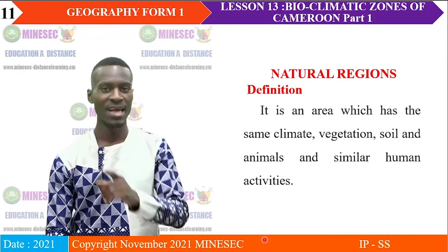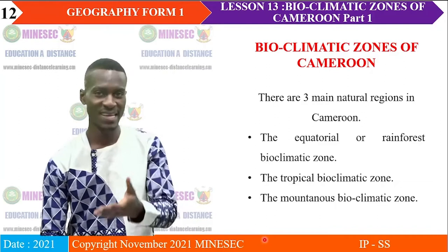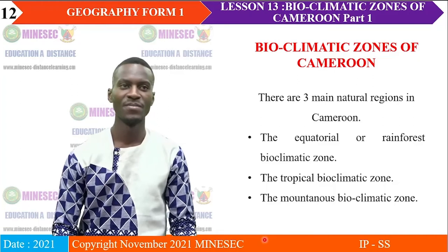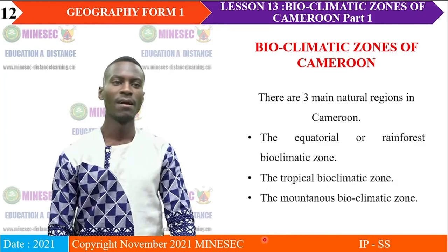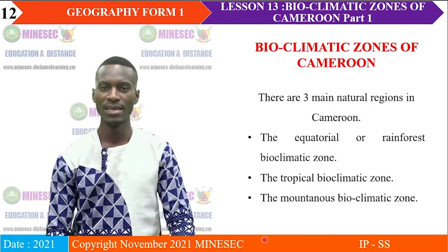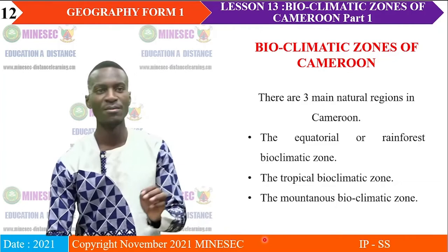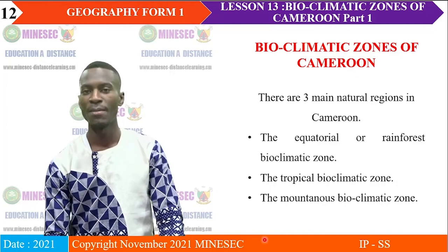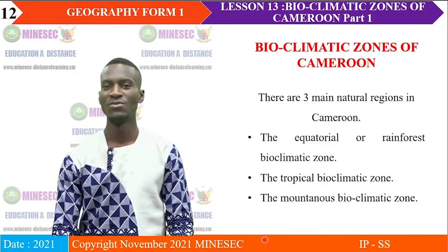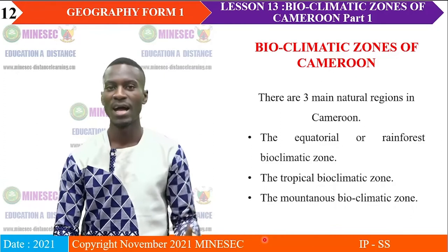At the end, you should be able to define the natural region. We now have the bioclimatic zones of Cameroon — the bioclimatic zones are the natural regions; they are two expressions to mean the same thing. There are three main natural regions in Cameroon: firstly, the equatorial or rainforest bioclimatic zone; secondly, the tropical bioclimatic zone; and thirdly, the mountainous bioclimatic zone. You should be able to locate each zone and give its characteristics — temperature, rainfall, soil, vegetation, animals, and human activities.